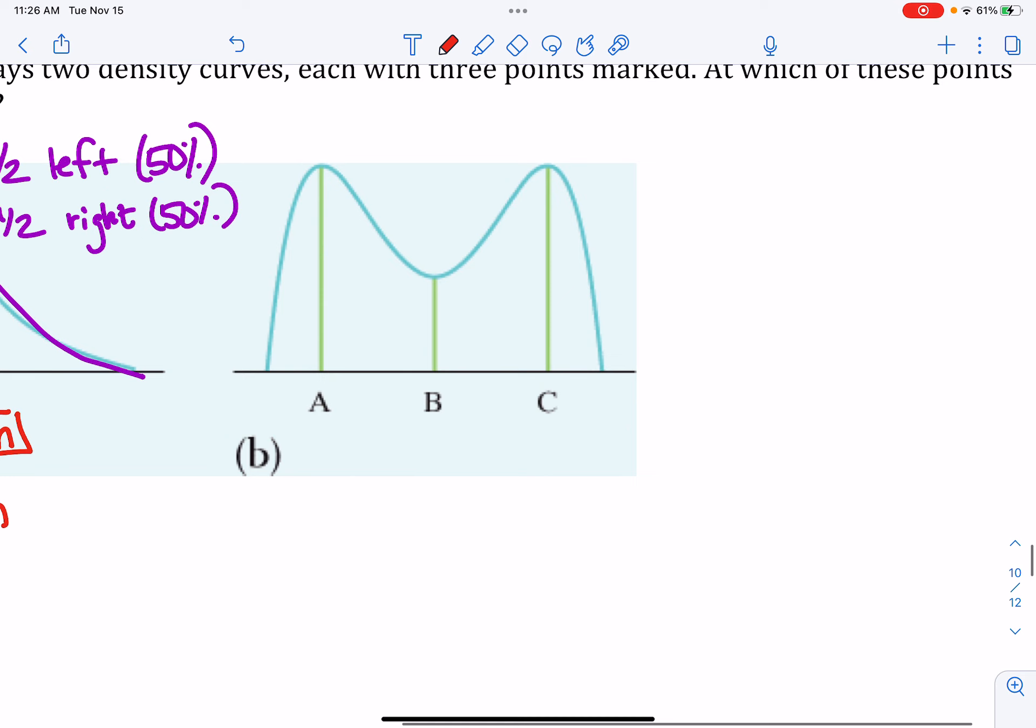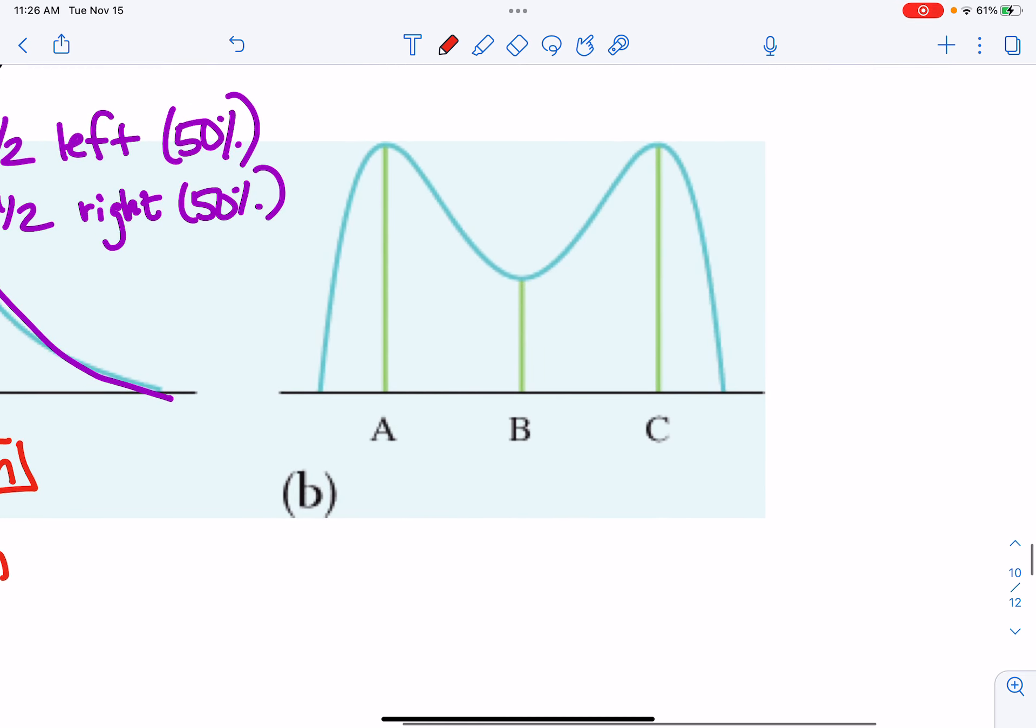Over here in the second distribution, you can see that B is right in the middle, A is over to the left, and C is over to the right. Now this is kind of a weird distribution. We don't really look at these bimodal types of distributions often.